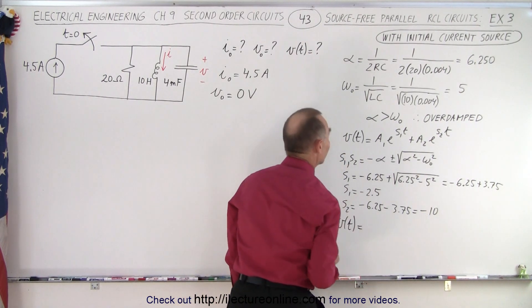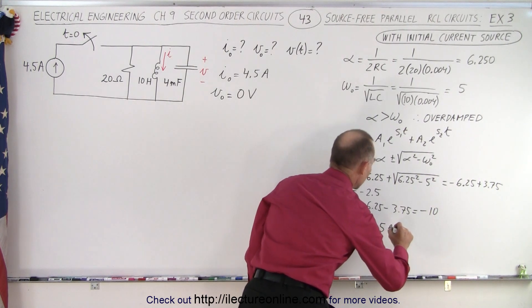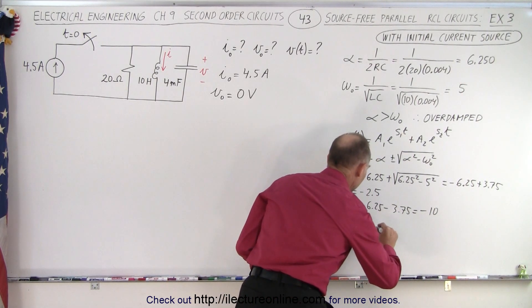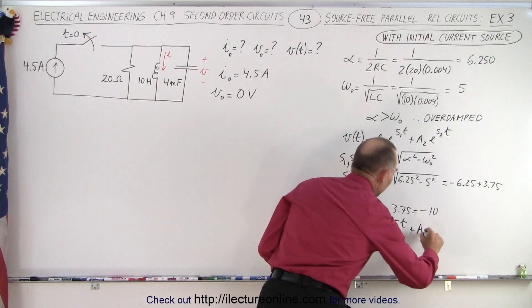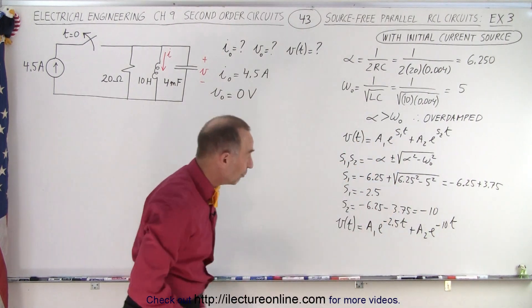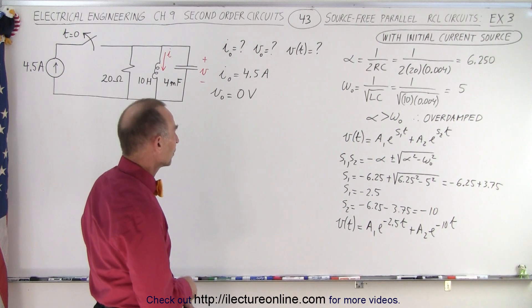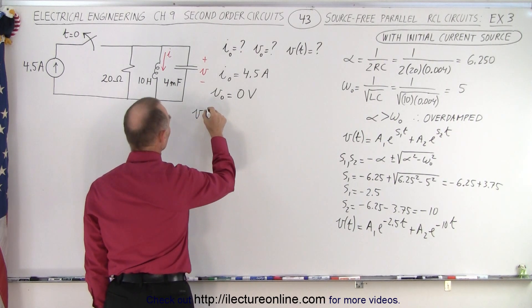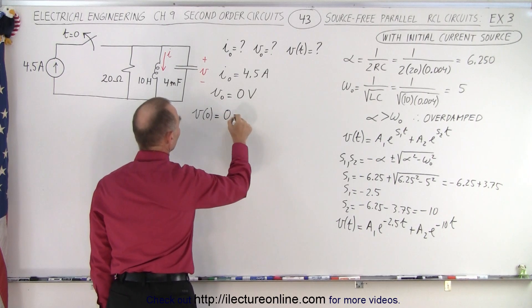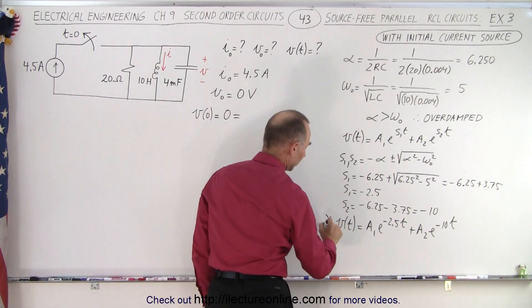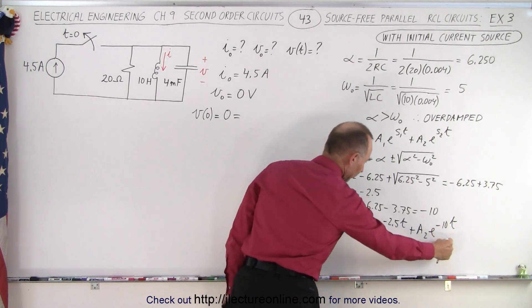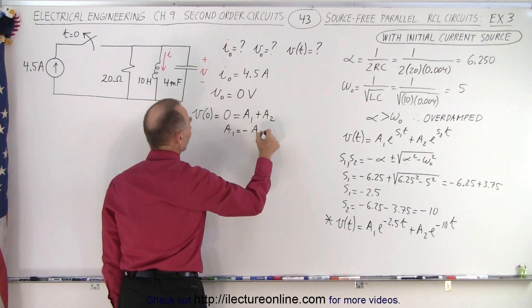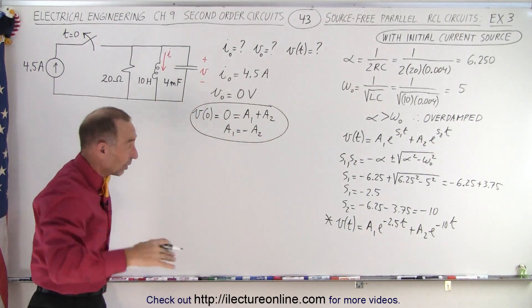Now we have s1 and s2, so the voltage as a function of time is: v(t) = A1·e^(−2.5t) + A2·e^(−10t). We need to find A1 and A2. Applying the initial condition v(0) = 0: 0 = A1·e^0 + A2·e^0 = A1 + A2. Therefore A1 = −A2 — they have the same magnitude but opposite signs.